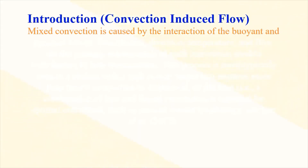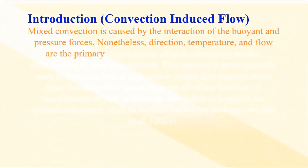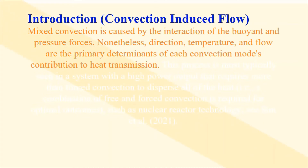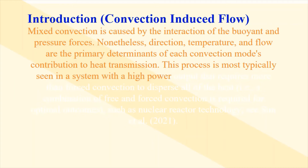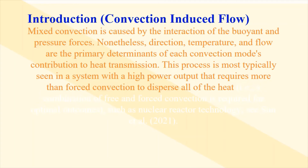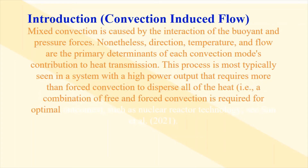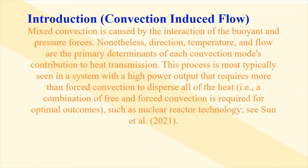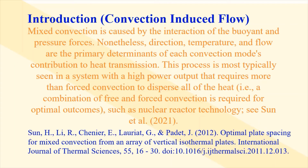Mixed convection is caused by the interaction of buoyant and pressure forces. Nonetheless, direction, temperature, and flow are the primary determinants of each convection mode's contribution to heat transmission. This process is most typically seen in a system with a high power output that requires more than forced convection to disperse all of the heat — that is, a combination of free and forced convection is required for optimal outcomes, such as nuclear reactor technology (Sun and others, 2021).